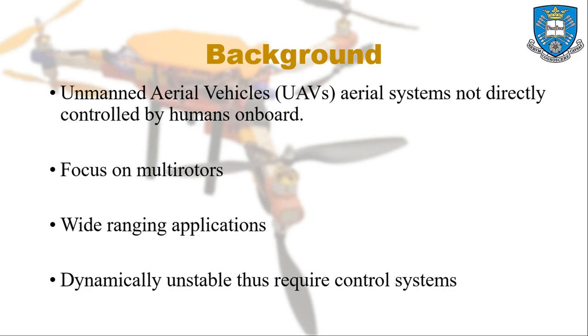For some background, unmanned aerial vehicles or UAVs are aerial systems that are not directly controlled by humans on board the craft. There are different kinds of UAVs that can be defined by their mechanical characteristics like their methods of actuation. I'll be focusing on multirotor UAVs which possess multirotor winged actuators. They have a wide range of applications especially in any field that requires dexterous precise motion like potentially agriculture or security surveillance.